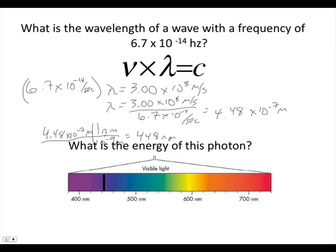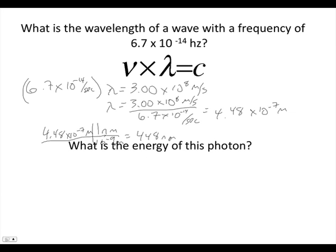The next question I might ask is, what is the energy of this photon? Again, I need an equation I can use. I'm looking for energy, and I'm given here both frequency from up here and the wavelength, which I just calculated. I can use either one. I'm going to go ahead and use the frequency. And I know that I can use energy equals Planck's constant times the frequency.